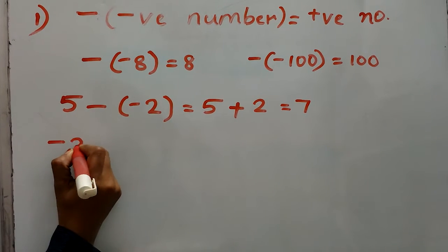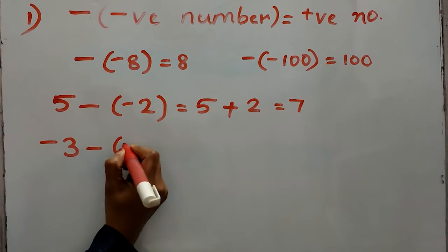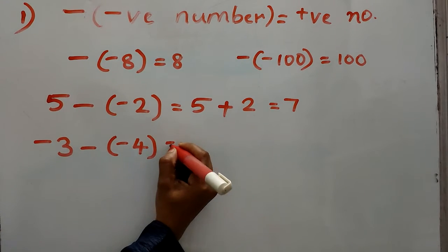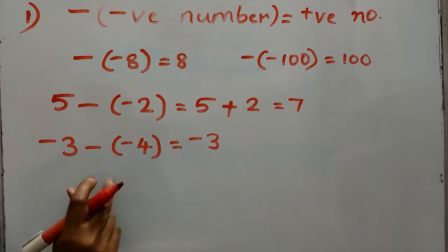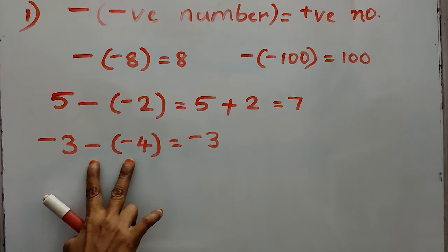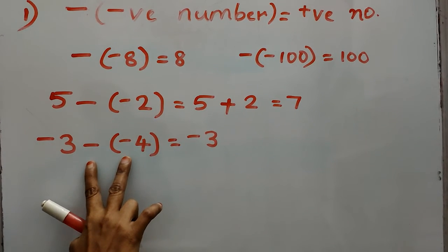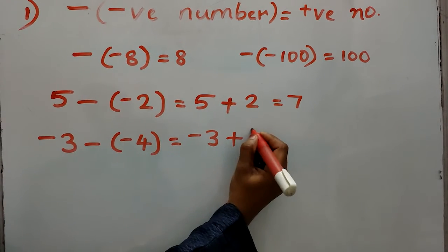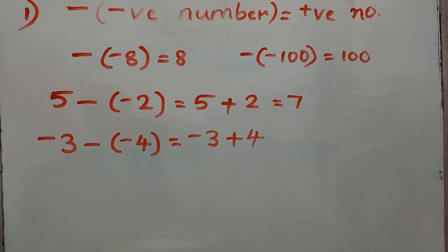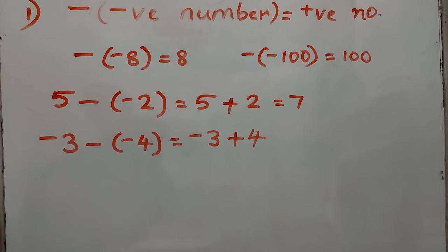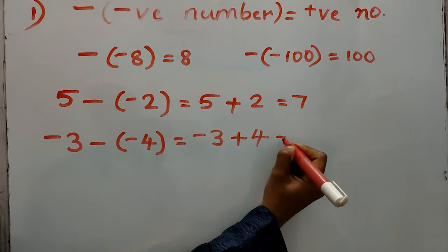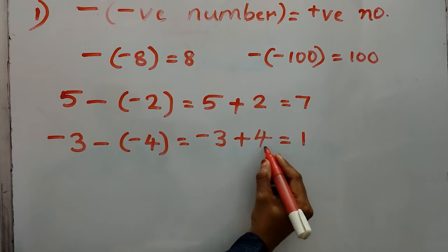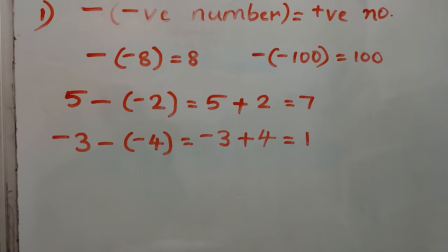One more example: negative 3 minus minus 4. First number is negative 3, and after negative 3, two negatives come together — those negatives will become a positive. So we have negative 3 plus 4. One is negative, another is positive, so subtract and put the sign of the bigger number. After subtracting, we get 1, and 4 is the bigger one. 4 is positive, so answer is positive.